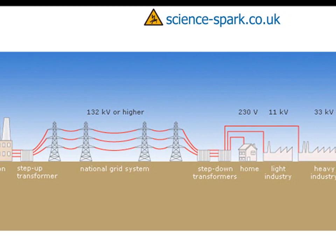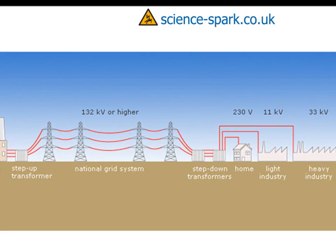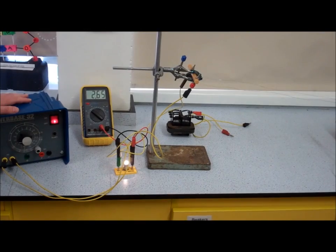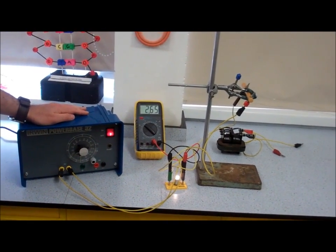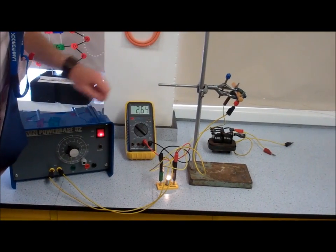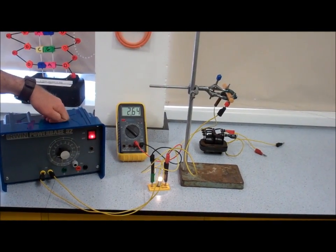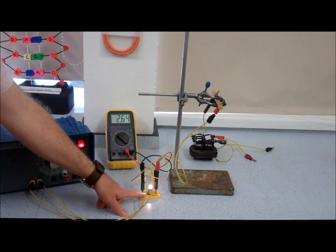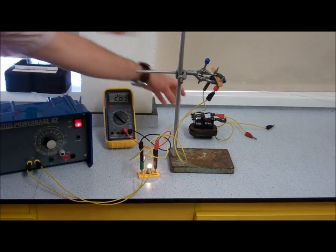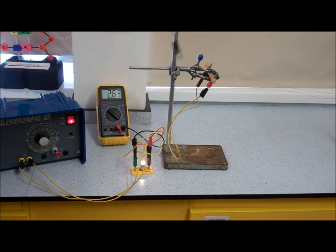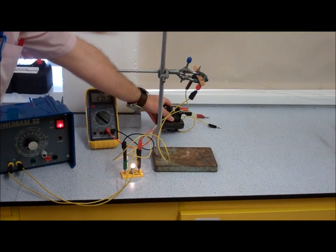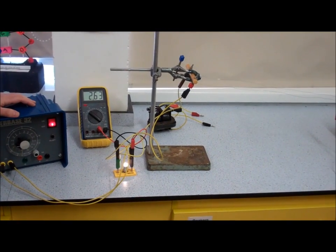What you can see here is our power station making some electricity - we're making 2.65 volts coming out here, and you can see that's across our light bulb. I've taken out the transformers here so you can see what happens in our National Grid if we didn't have any transformers.